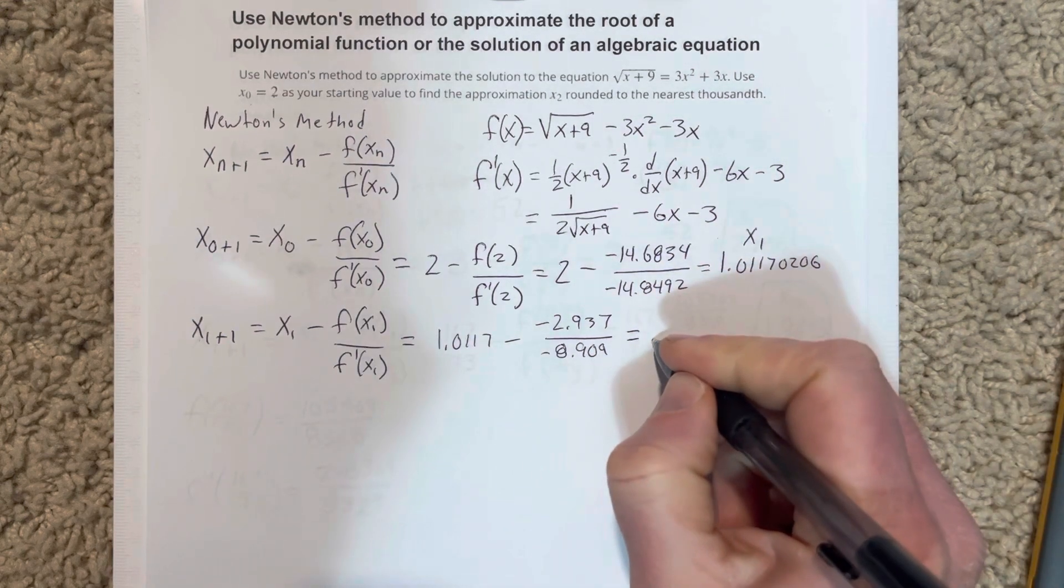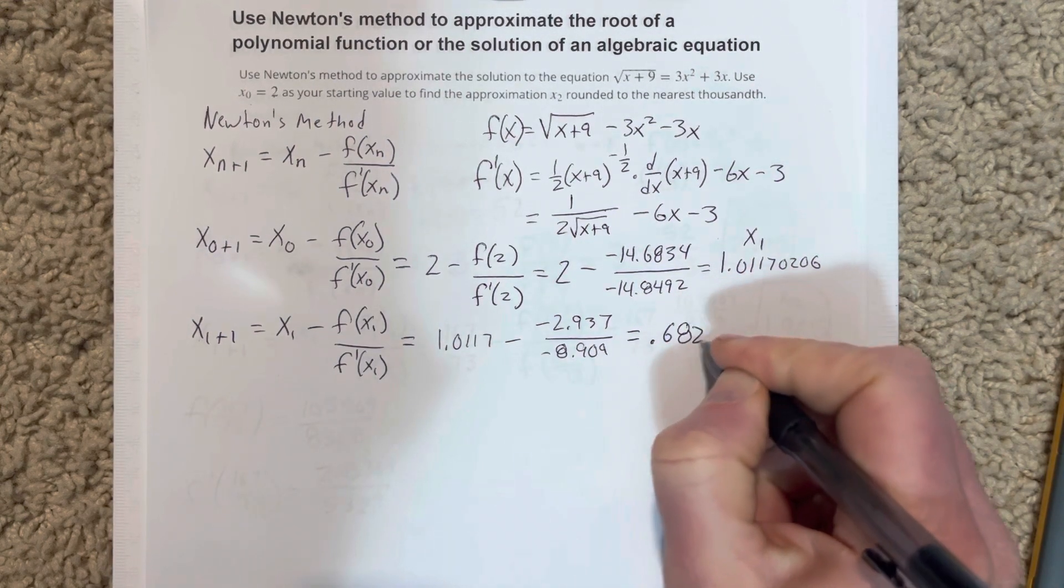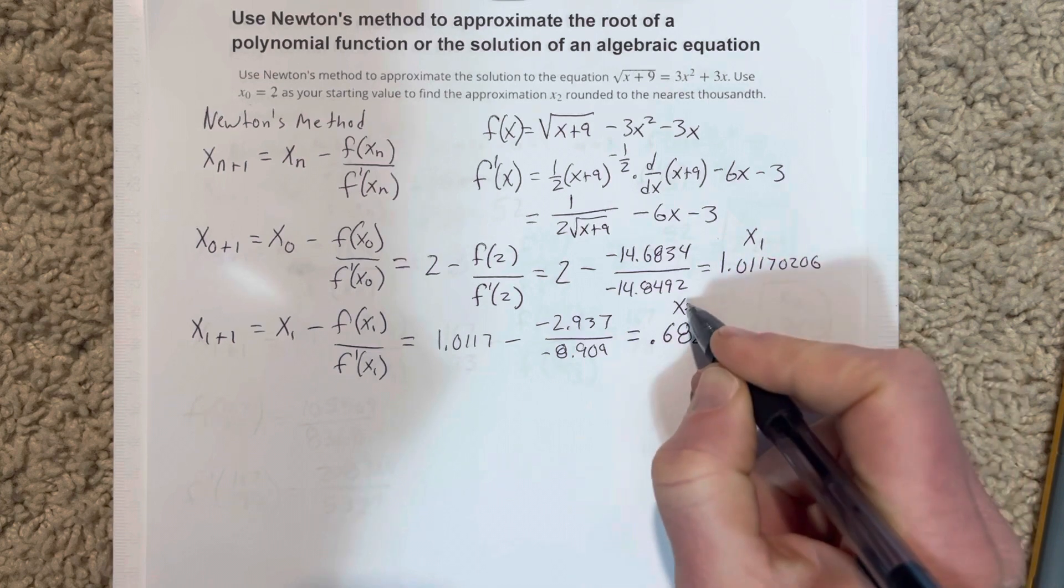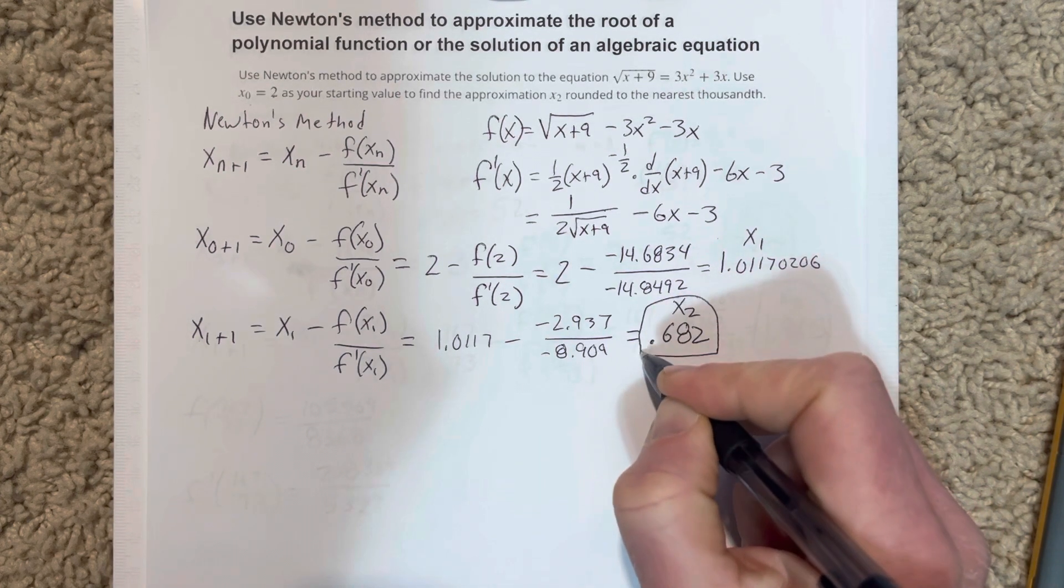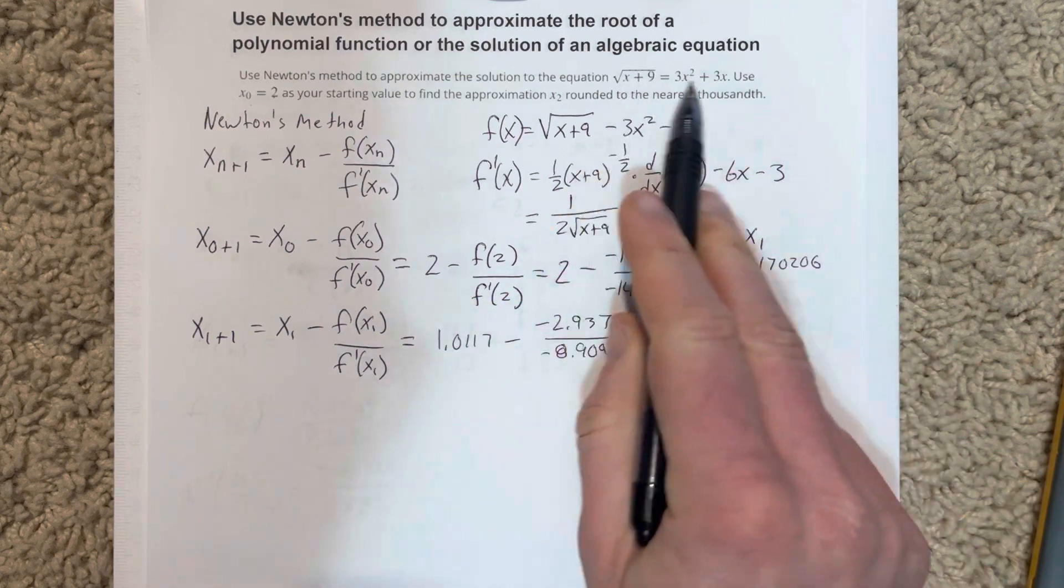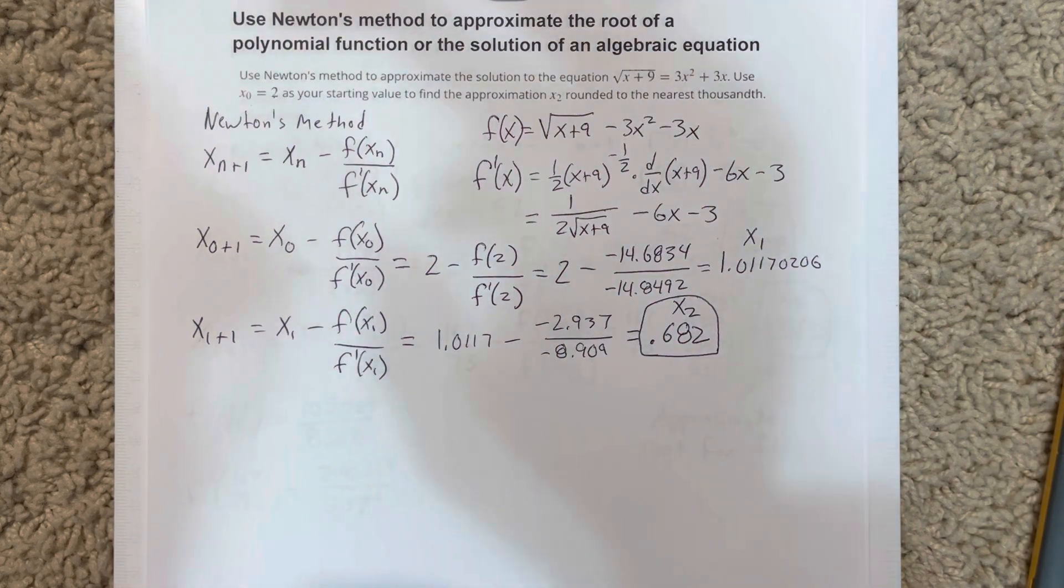We put all that in, I get 0.682 for x2. This is the approximation for the root for this function here. That's it. Thank you.